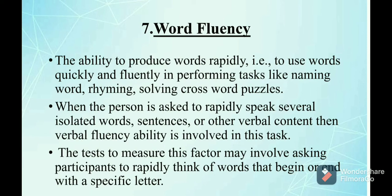The seventh and last primary mental ability is word fluency — the ability to produce words rapidly, that is to use words quickly and fluently in performing tasks like naming words, rhyming, and solving crossword puzzles. When a person is asked to rapidly speak several isolated words, sentences, or other verbal content, verbal fluency ability is involved. This factor is responsible for the communication skills of the person, and tests may involve asking participants to rapidly think of words that begin or end with a specific letter.